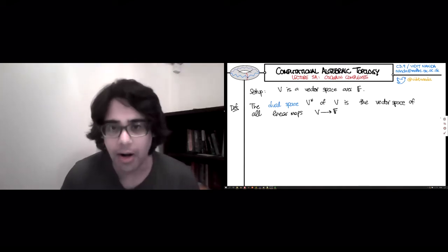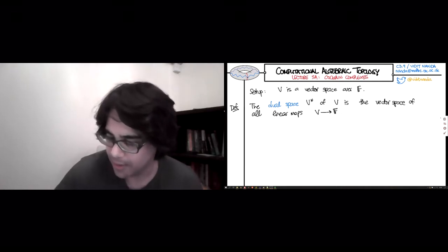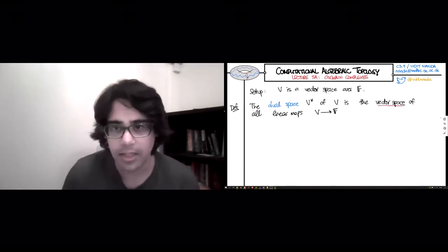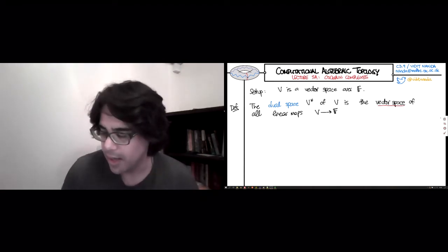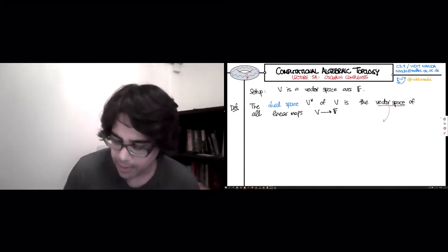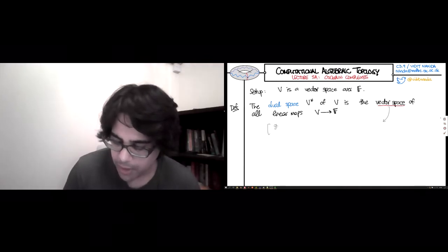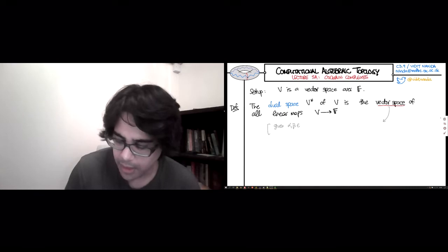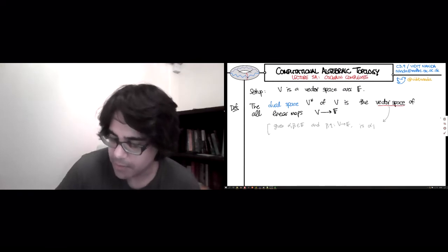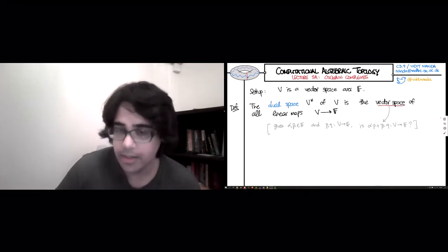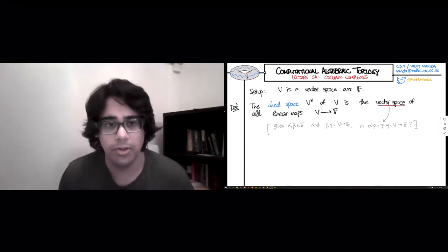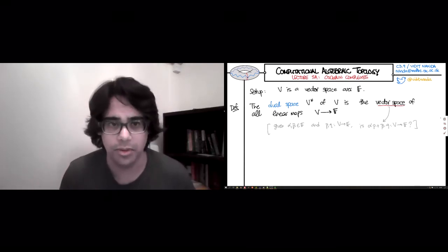There's a part of this definition that needs to be checked, which is that the set of all such maps actually carries the structure of a vector space. The important thing is, if you have scalars alpha and beta in F and two such maps P and Q from V to F, is alpha times P plus beta times Q another linear map? The answer is yes. Therefore, you have on your hands a vector space.